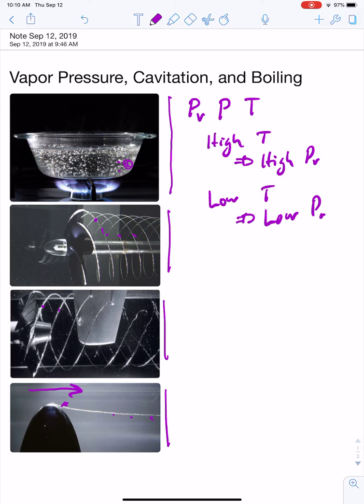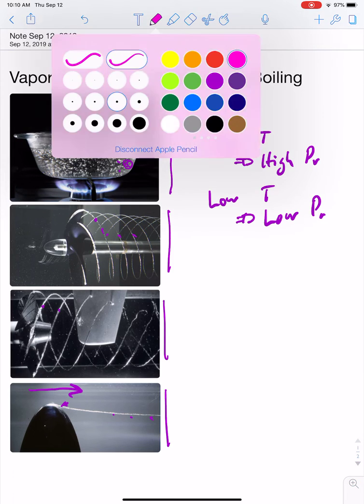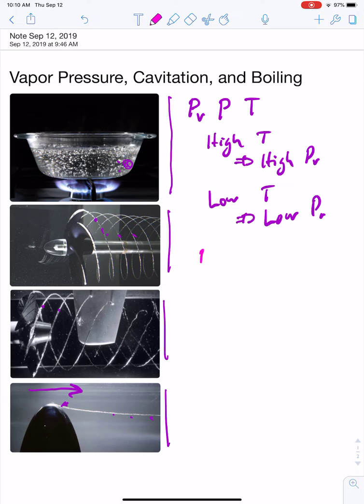So example of boiling is you've got you've heated the liquid. It's gotten really warm. The vapor pressure gets higher and higher and higher as the water temperature rises. And then we get, so boiling occurs.